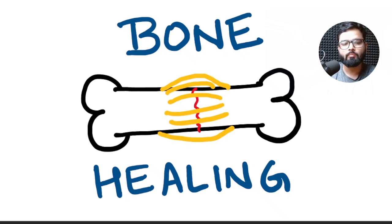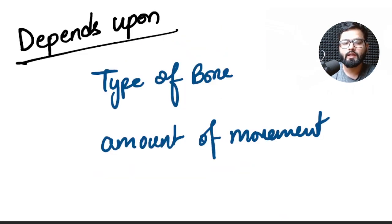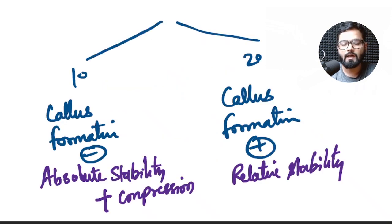We are going to learn today about bone healing process. The bone healing depends upon the type of bone in which the fracture has occurred and the amount of movement which is occurring after the fracture till the fracture is healed. Two types of healing are seen in the bone.